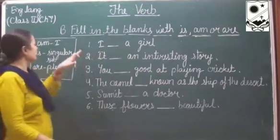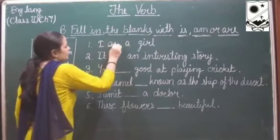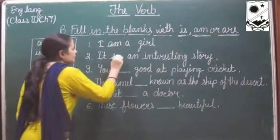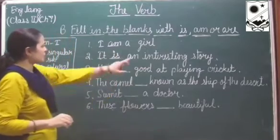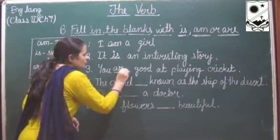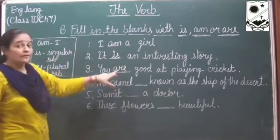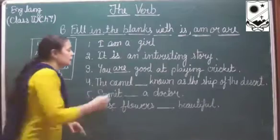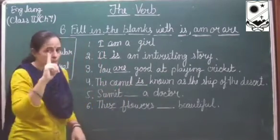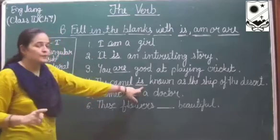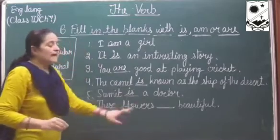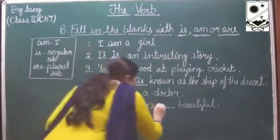First: I - we use am, so I am. Next: it - used for a single one, so it is, as in an interesting story. You - we use are with you. The camel - we are talking about a single camel, so the camel is, because myth is singular. These flowers - are, because flowers are plural.